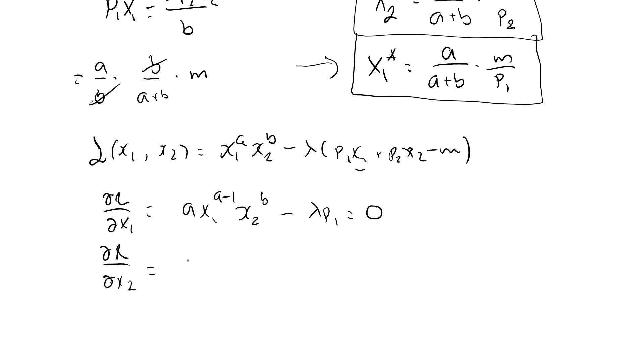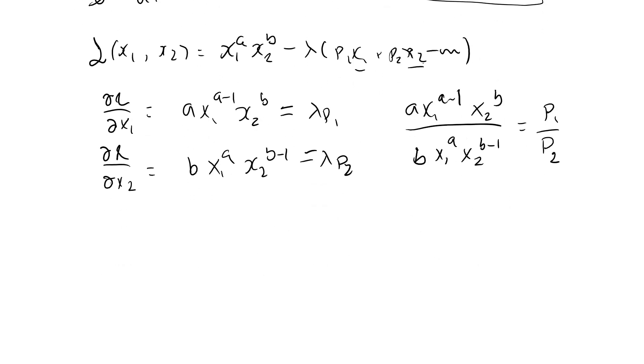Partial l, partial x2 is b, x1 to the a, x2 to the b minus 1. Then we have an x2 here, so minus lambda p2 should be 0. Move lambda p1 and lambda p2 over on the right-hand side. Do the left-hand side, ax1 a minus 1, x2 to the b, over the left-hand side of the second equation. It's an a, x2 b minus 1, lambda cancels, and it's p1 over p2. And this simplifies to exactly the same thing as setting MRS equal to minus p1 over p2. This is ax2 over bx1 equal to p1 over p2. Use this with the equation of the budget line, and you will find exactly the same solution.